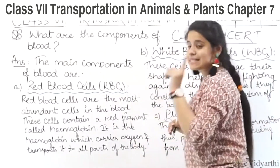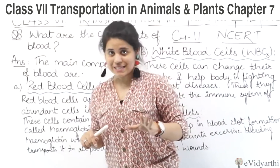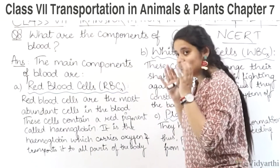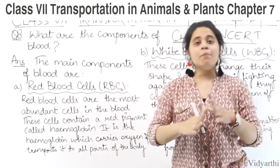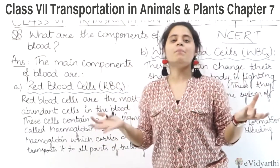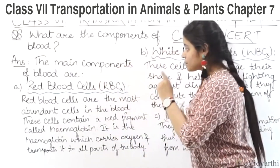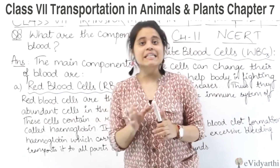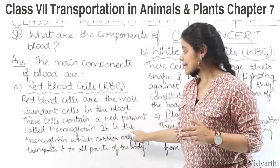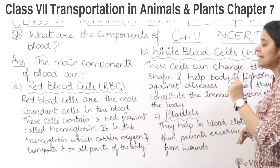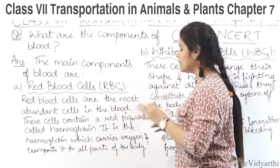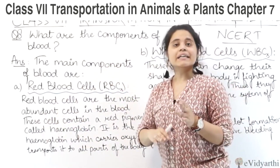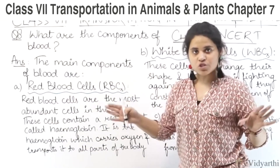The main components of blood — sab se pehle marker de red blood cells ki. Red blood cells are the most abundant cells in the body — abundant ka matlab hota hai means ke bohot zyada quantity, bohot zyada hound pey maari body me red blood cells hoti hain. These cells contain a red pigment called hemoglobin. It is the hemoglobin which carries oxygen and transports it into all parts of the body.